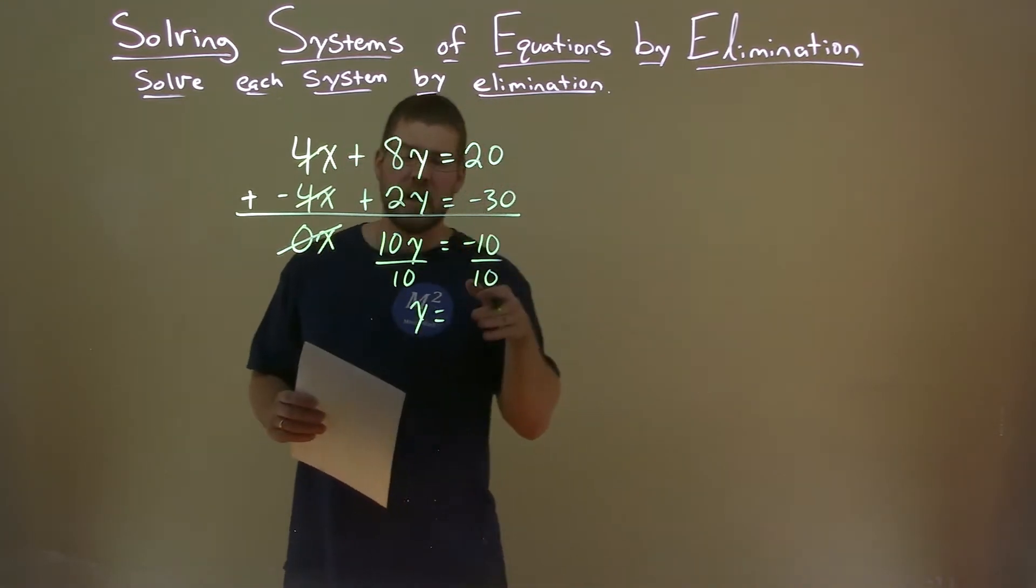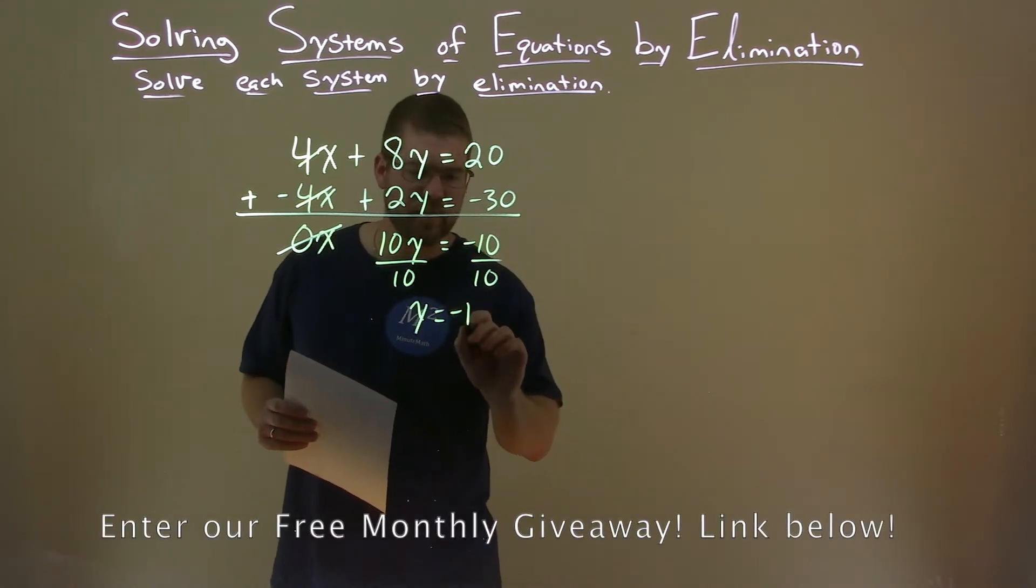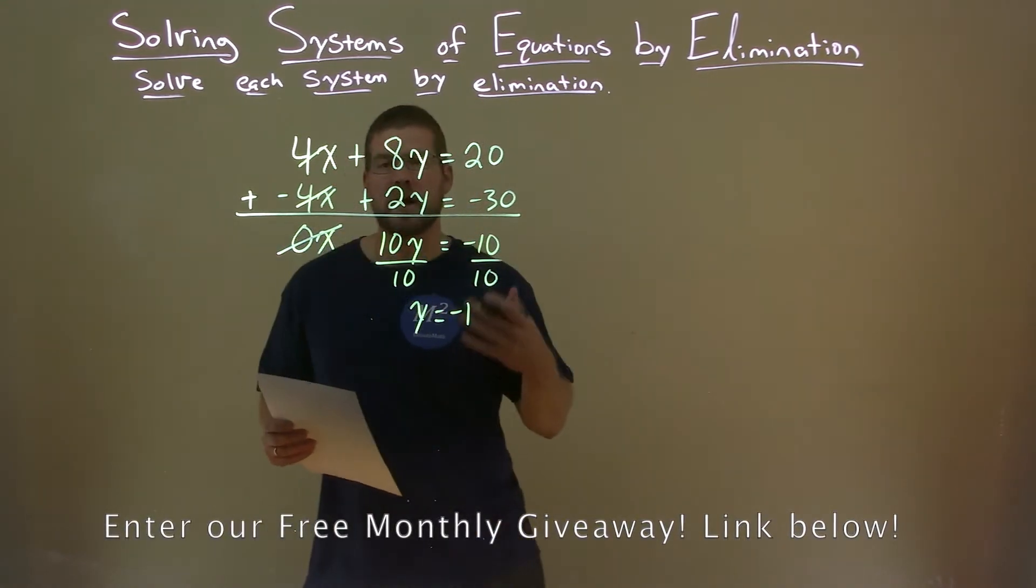y equals negative 10 divided by 10, negative 1. So we have our y value. We need to find our x value.